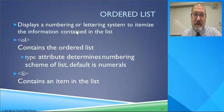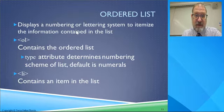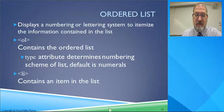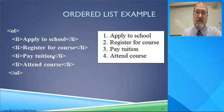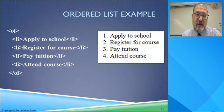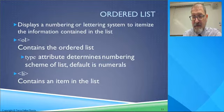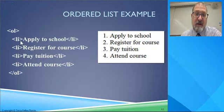Ordered lists are almost exactly the same thing. They can be numbered, lettered, or Roman numerals — however you want to do it. You set the type it's going to use with attributes, which is a good segue into attributes. We use the LI element for containing the items of the list. This is just the default ordered list for now — we'll get into the type attribute as we go. We're just going to use the default.